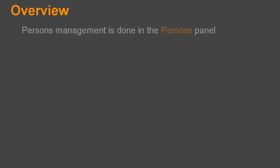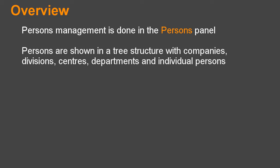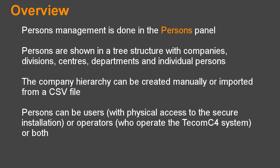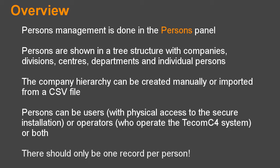Overview: Persons Management is done in the Persons Panel. Persons are shown in a tree structure with companies, divisions, centres, departments, and individual persons. The company hierarchy can be created manually or imported from a CSV file. Persons can be users with physical access to the secure installation, or operators who operate the TCOM C4 system, or both. There should only be one record per person.